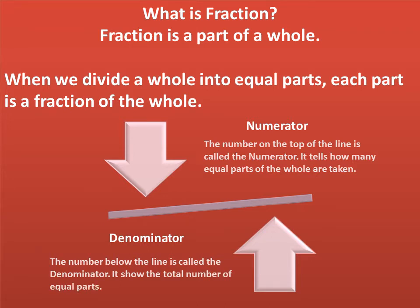The number below the line is called the denominator. It shows the total number of equal parts. For example, in 2 upon 7, 2 is called the numerator and 7 is called the denominator.